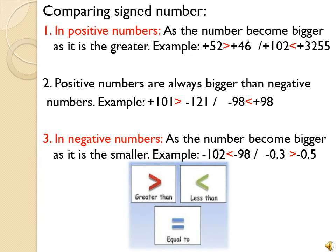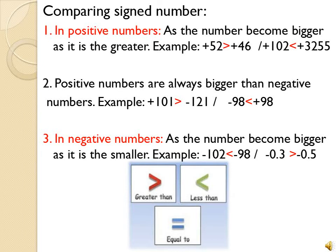So after we define the terms — signed number, decimal numbers, integer numbers, the opposite of signed numbers — now let's take a look at how we compare the signed numbers, كيف أنا بقارن a signed number by greater than, less than, or equal. أول شيء: in positive numbers, نحنا بنعرف إنه كل ما كبر العدد بال positive number, كل ما هو كان الأكبر — as the number becomes bigger, as it is the greatest.